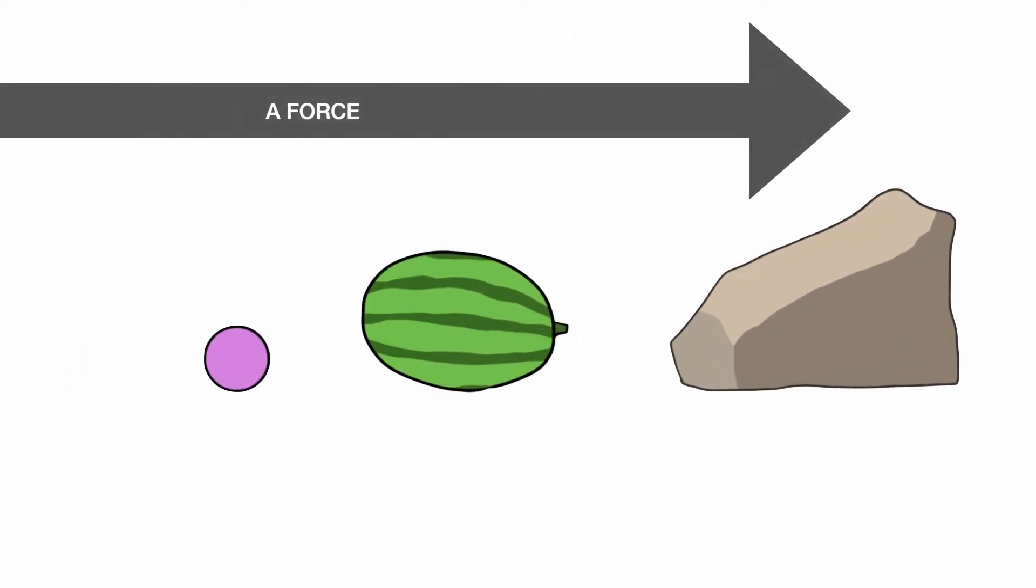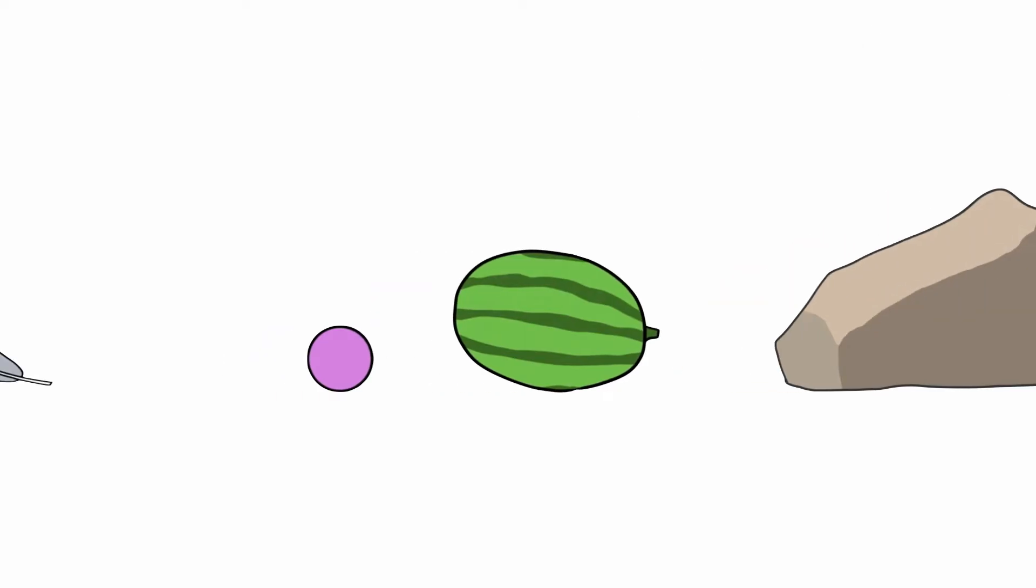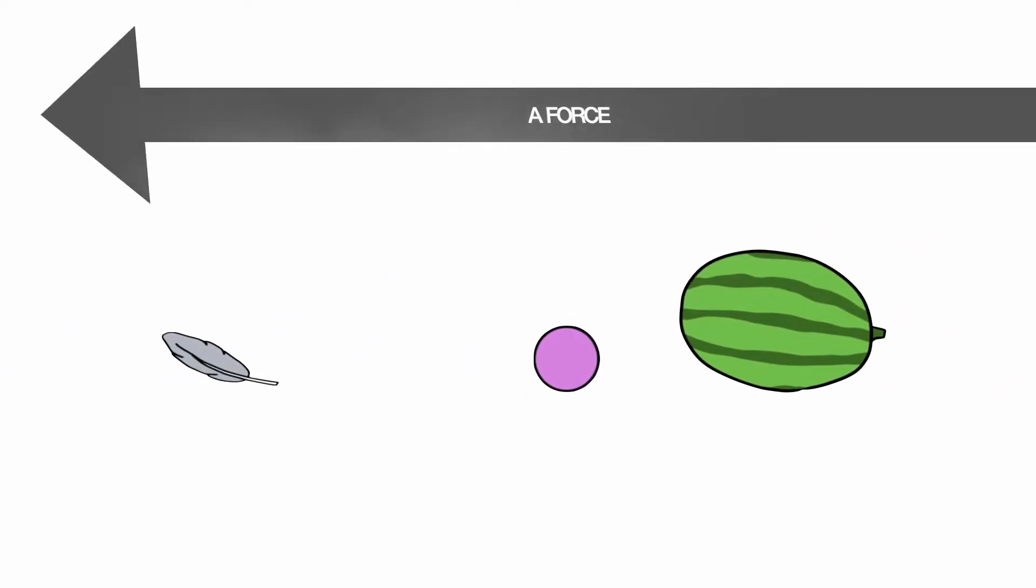The amount of inertia determines what happens to an object when a force is applied to it. The more inertia, the more resistance to a change in motion. The less inertia, the easier it is to change motion.